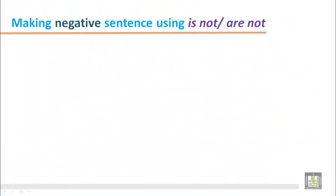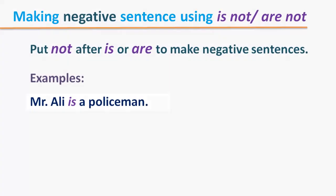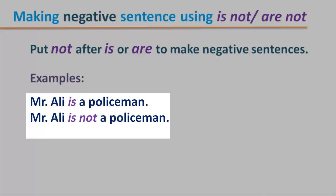Now we have to make a negative sentence using 'is not' or 'are not'. Put 'not' after 'is' or 'are' to make negative sentences. Example: 'Mr. Ali is a policeman' — this is a positive sentence. And we make it negative this way: 'Mr. Ali is not a policeman.' So we put 'not' after 'is' or 'are'.